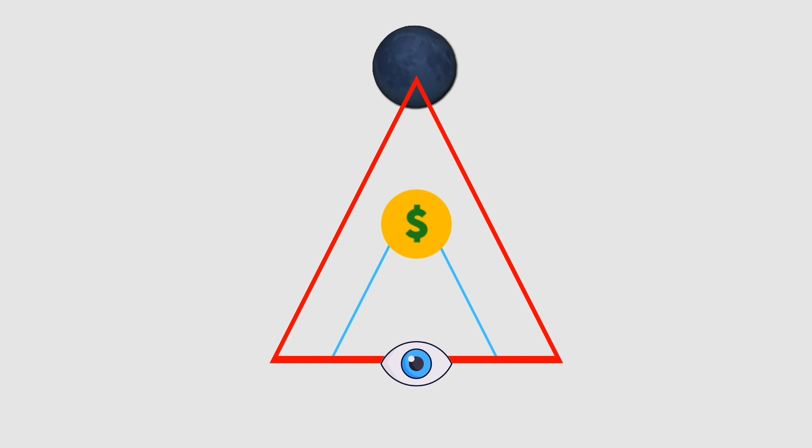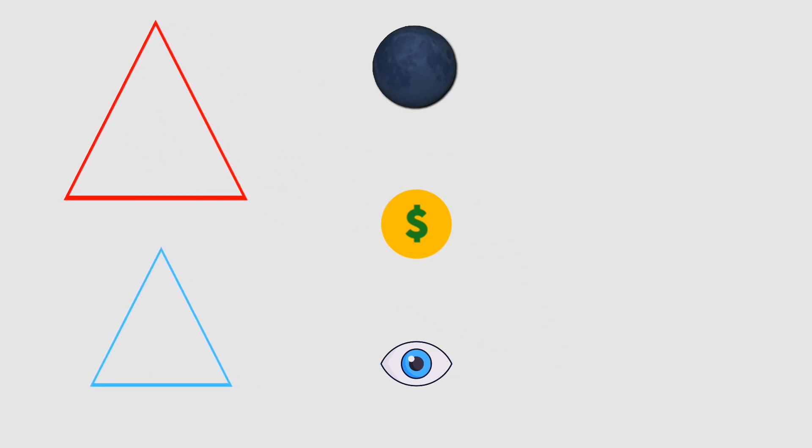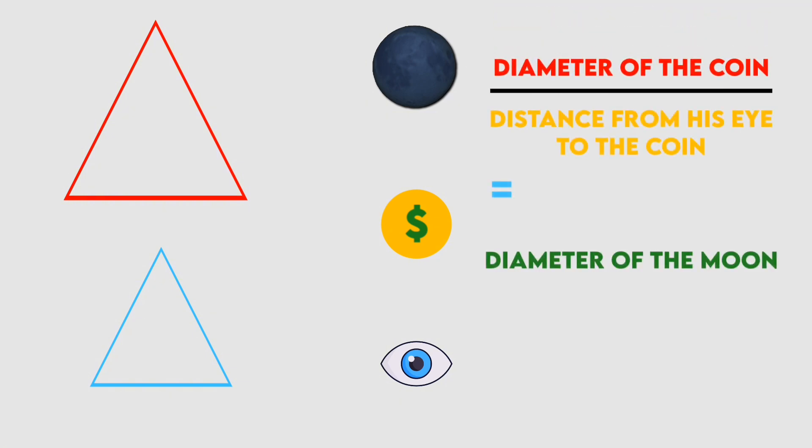What does it mean for two triangles to be similar? It means that their corresponding angles are equal, and their corresponding sides are proportional. Using basic trigonometry, Aristarchus set up a proportion: the diameter of the coin divided by the distance from his eye to the coin equals the diameter of the moon divided by the distance from his eye to the moon.